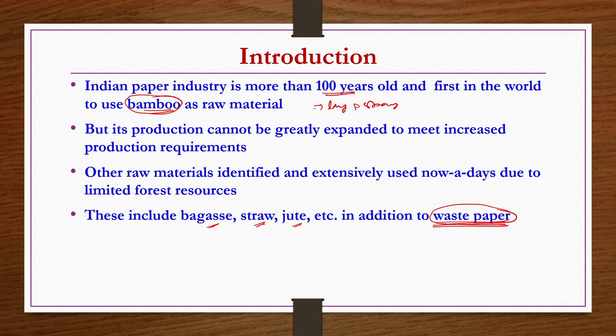However, availability of such waste papers is in limited quantity. Because of that, paper industries based on waste paper can only be run as small units or small scales. We understand that bamboo is a better raw material because of the length and strength of the cellulose obtained. But since availability of bamboo is limited, you can develop raw materials like bagasse and blend them along with bamboo to try to produce better quality paper.